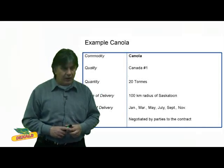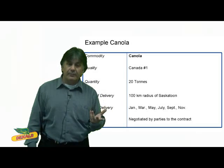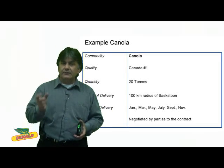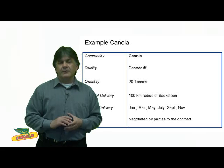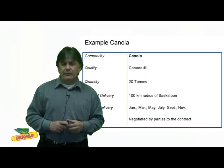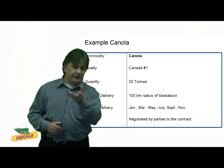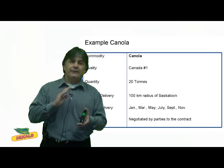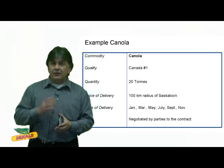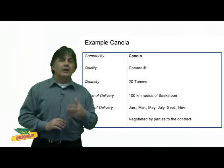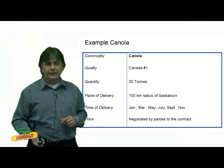Now let's look at an example with canola. The quality is Canada number one, trading unit is 20 metric tons — just as corn was 5,000 bushels. Place of delivery is within a 100-kilometer radius of Saskatoon. Contract months are January, March, May, July, September, and November. Note that with both corn and canola there's not a futures contract for every trading month, so when delivering canola in October, you would use the nearby November futures contract to price that canola plus or minus your basis. Price is negotiated by the parties to the contract.